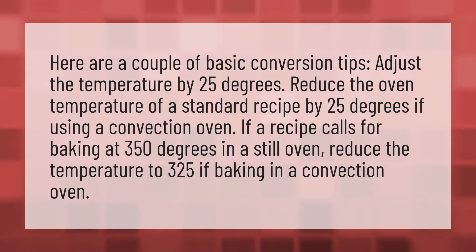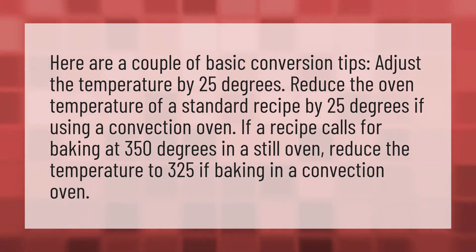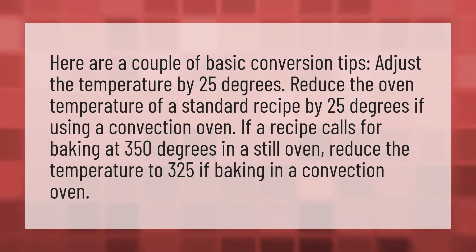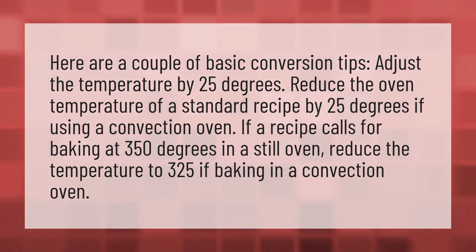Adjust the temperature by 25 degrees. Reduce the oven temperature of a standard recipe by 25 degrees if using a convection oven. If a recipe calls for baking at 350 degrees in a still oven, reduce the temperature to 325 if baking in a convection oven.